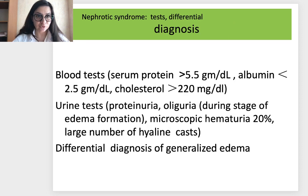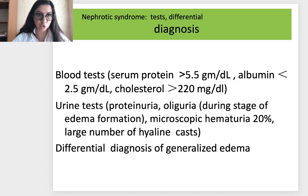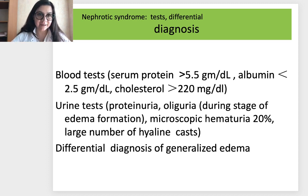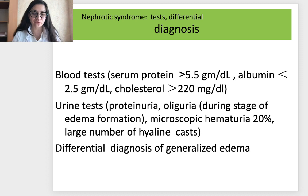Diagnosis of nephrotic syndrome: blood test shows serum protein usually more than 5.5, albumin less than 2.5, and increased cholesterol more than 220 mg/dL. Urine test shows proteinuria more than 3.5 g per day and oliguria — decreased daily urine volume. Oliguria is most usual during the stage of edema formation. There can be microscopic hematuria in 20% of cases and a large number of hyaline casts. We must also do differential diagnosis to exclude all other causes of generalized edema.